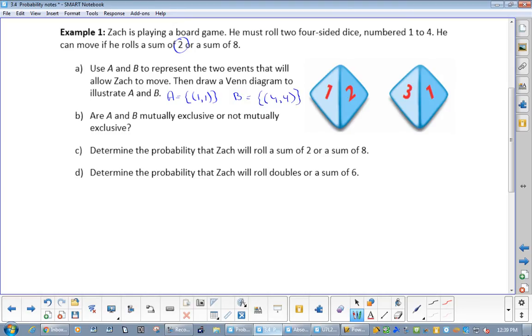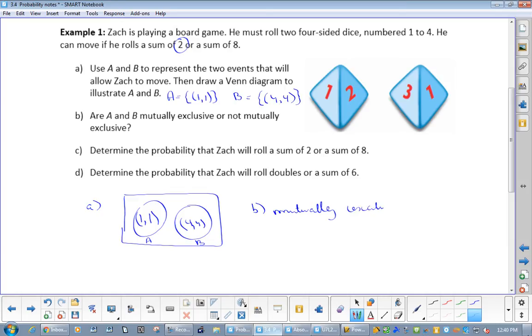So for A, this is what my Venn diagram would look like: 1, 1 and 4, 4. That's A and that's B. It says, are A and B mutually exclusive or mutually not exclusive? Mutually exclusive.